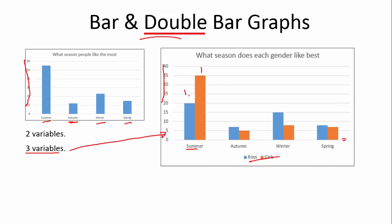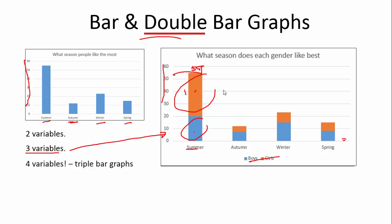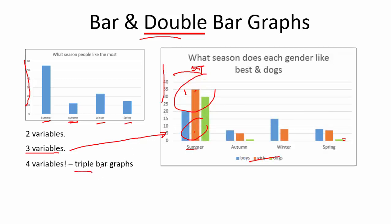Another way to show a double bar graph is with a percentage - this would be the total number of boys and girls, which was 55 as we knew, and this would show how many girls and boys like summer the most. This is not nearly as easy a way to show double graphs, and I would strongly recommend keeping it the other way. You could also get four variables - this would be a triple bar graph; you don't need to worry about this at the moment. Here you can see we've added dogs, so what season does each gender like best - and dogs - adding a fourth variable so we can compare the seasons to boys, girls, and dogs.